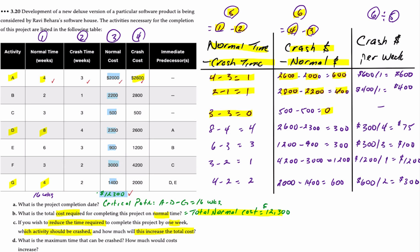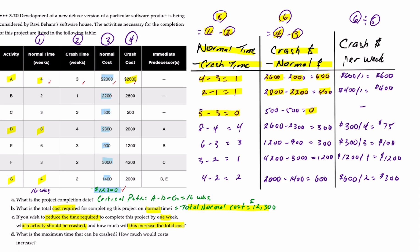You can pause the video to confirm all these numbers. The last column is the most important — it gives us the crash cost per period, or per week. We take column six divided by column five. For activity A, the $600 difference divided by one week equals $600 per week. Activity B: $400 divided by one equals $400 per week. Column five also tells us the maximum number of weeks each activity can be crashed.